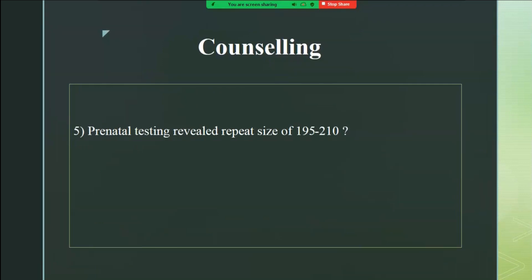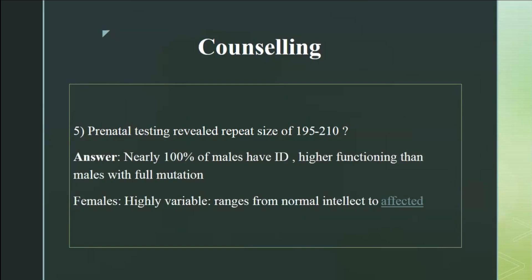A dilemma arises when prenatal testing reveals a repeat size between 195 to 210 — a borderline range. Some tissues might have pre-mutation range and some might have full mutation range. We can't test all tissues to determine what percentage have pre-mutation versus full mutation. However, nearly 100 percent will still have intellectual disability, though it will not be as severe as males with full mutation. For females it is highly variable.